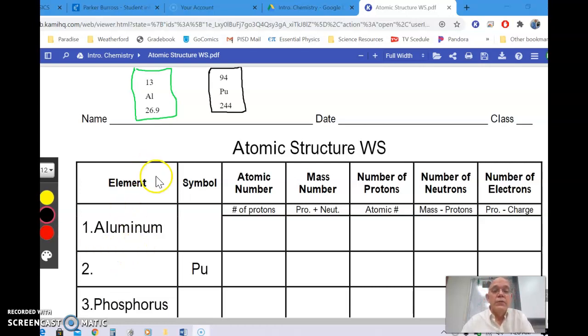So we're going to use the atomic worksheet. You will need your chart, a periodic table that looks something like that, the fancy one we have. And if you don't have one, you have to let me know and I can email you one.